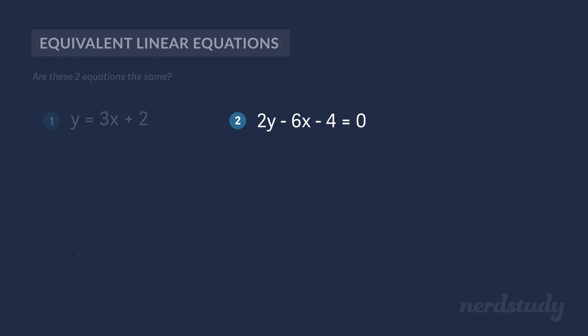Let's add 6x and 4 onto both sides of the equation to get the following. All we have to do now is divide both sides by 2, which gives us y equals 6x divided by 2 plus 4 divided by 2, which simplifies down to y equals 3x plus 2.